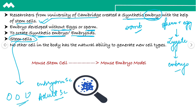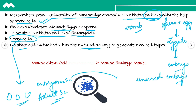Jo embryonic stem cells hote hai, they come from the unused embryos. And the adult stem cells jo hai, woh develop hote hai ek fully developed tissue se — jaisa ki brain, skin, bone marrow, etc. Aisi ability, humari body mein kisi aur cells ke paas nahi hoti hai — this natural ability to generate new cell types.